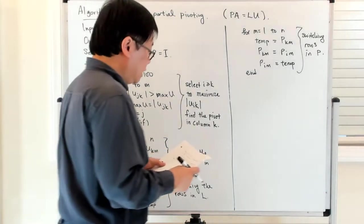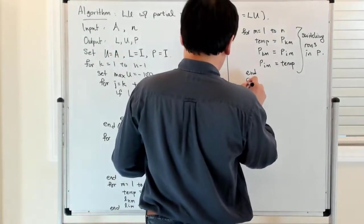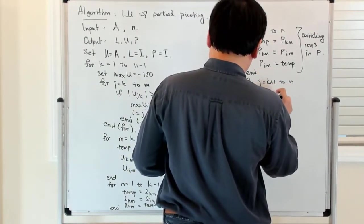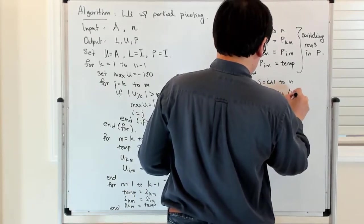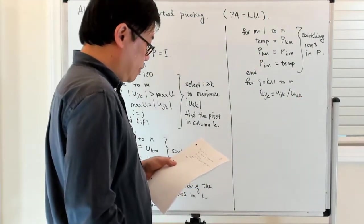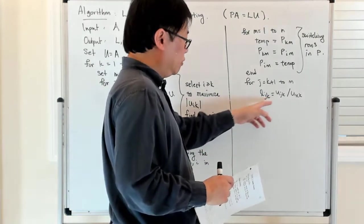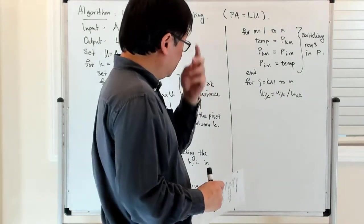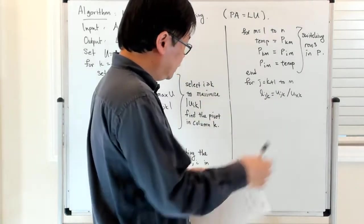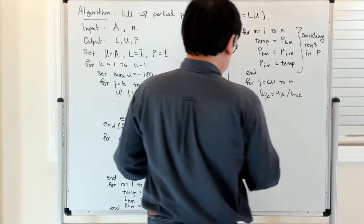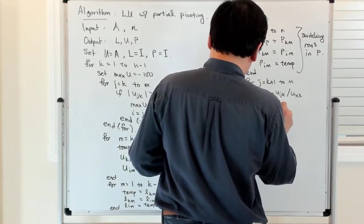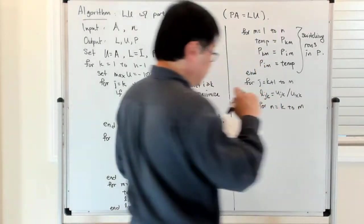And then if you recall, then you do the elimination part. For J equals K plus 1 to M, L(J,K) equals U(J,K) divided by U(K,K). So I'm computing the entry in L. These are the entries below the diagonal in the B matrix. Normally there's a minus sign, but when you take the inverse of it, the sign gets negated, so it's just this coefficient.